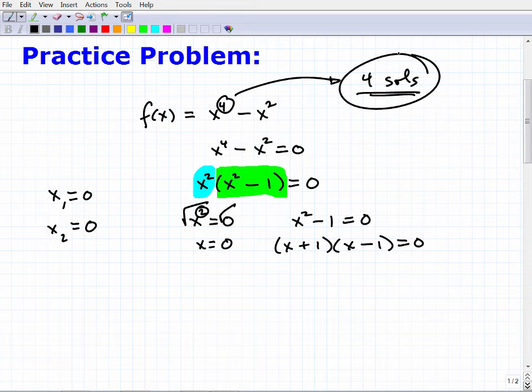Now how do we get the other two? Well, right here x + 1 times x - 1, these linear factors equal to zero, I can just set each one of these equal to zero and solve. So I get x = -1 and x = 1. So these are my last roots.